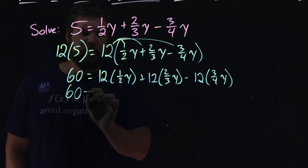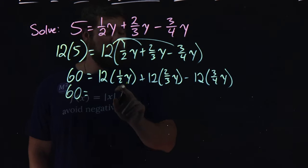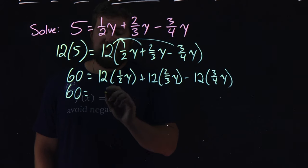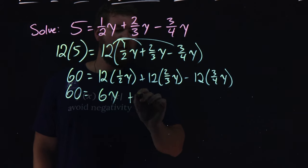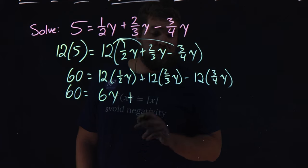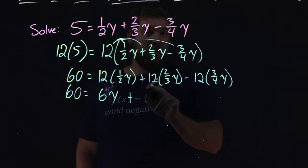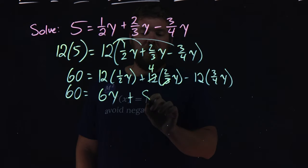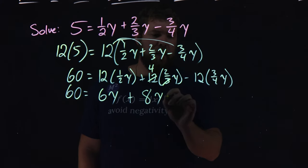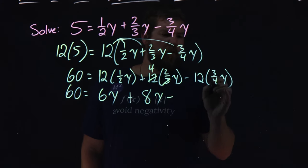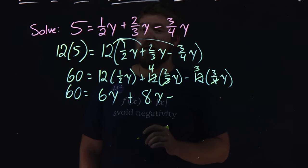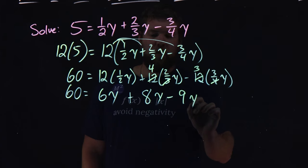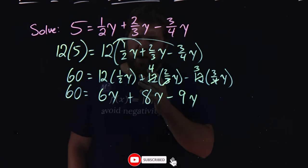60 stays here. 12 times 1 half, look at the coefficient there, that's going to be 6. So, we have 6y plus 12 times 2 thirds. Well, 3 goes into 12 four times. So, we cancel that, put a 4. And 4 times 2 is 8, 8y. Minus here, same thing. 4 goes into 12 three times. Cancel that out. And 3 times 3 is 9. We have 9y right here.